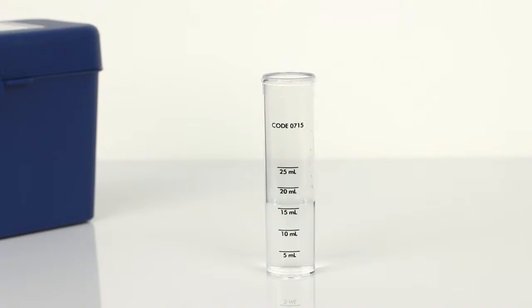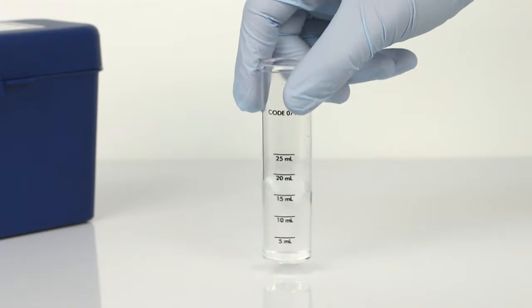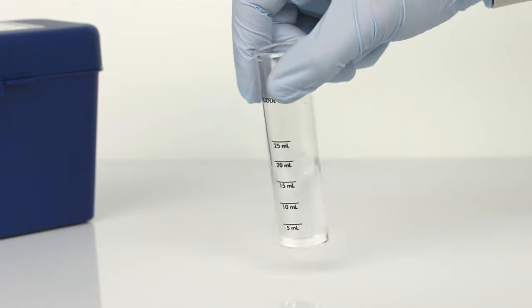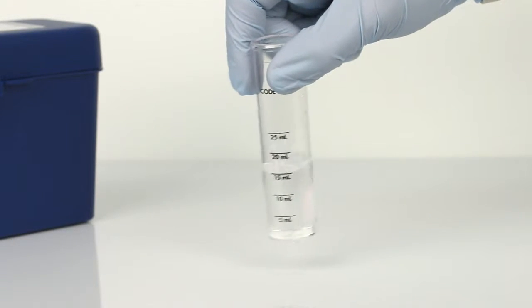The next step is to add three drops of sulfuric acid 0.5 normal. The bottle contains a dropper tip, so it's important to hold the bottle vertically to get a consistent drop size. Swirl the vial to mix the reagents. The solution will remain clear.